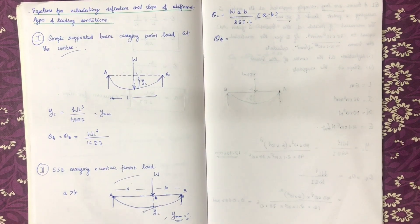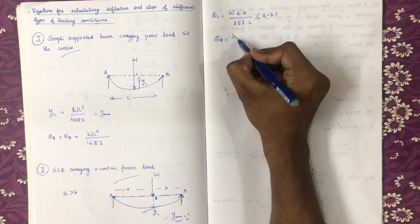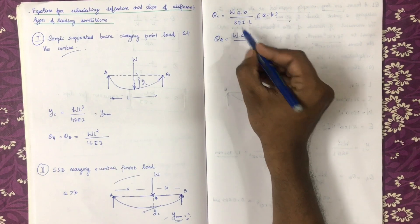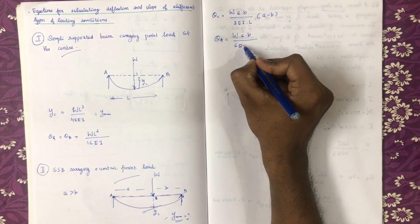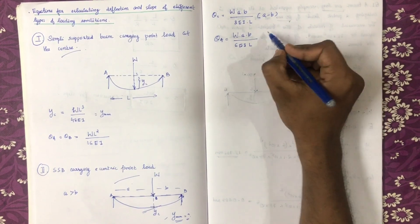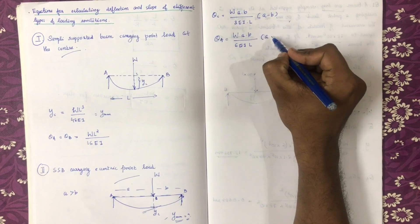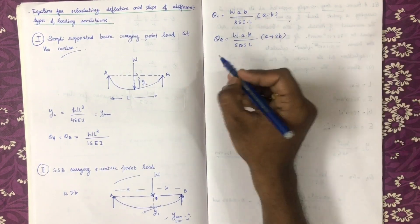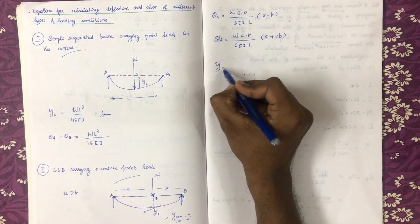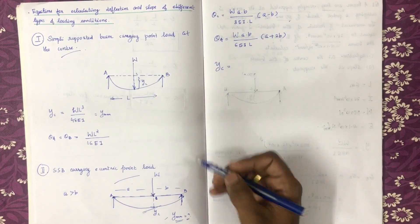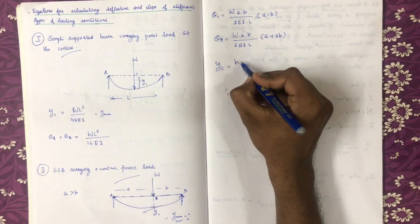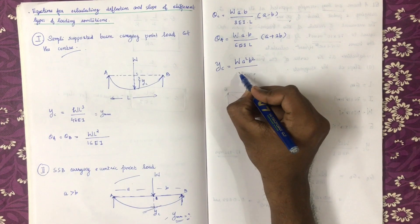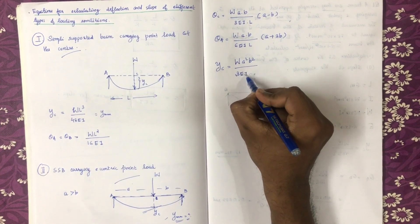Theta A equals W·a·b divided by 6EI·L, multiplied by (A + 2B). A minus B equals A plus 2B in this context. YC, the deflection at C, is equal to W·a²·b² divided by 3EI·L.